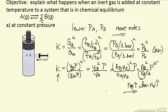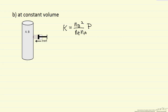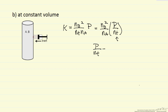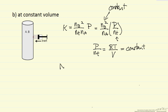Now let's look at the case for constant volume. The equilibrium expression is the same, but let's see what happens. Writing it in terms of pressure over total number of moles: if I add an inert, I increase the total number of moles, but I also increase the pressure proportionally, such that pressure over total number of moles equals RT over V from the ideal gas law. Since R, T, and V are all constant, this term is constant — we've increased total moles and proportionally increased pressure, so all terms stay constant.